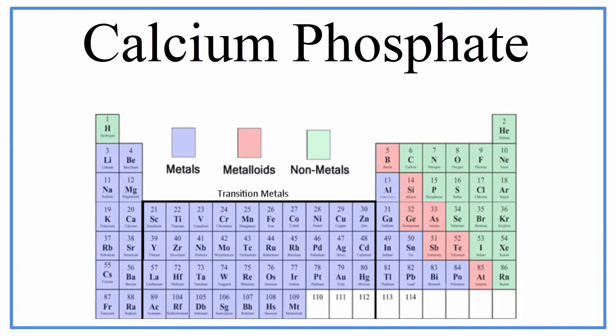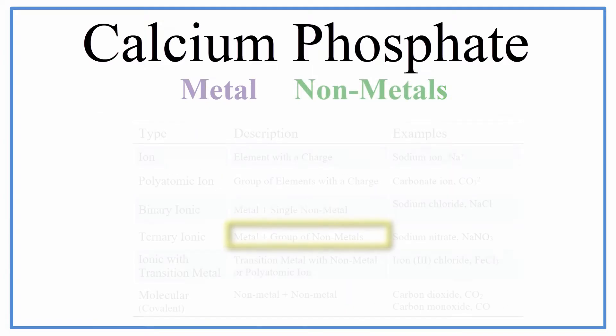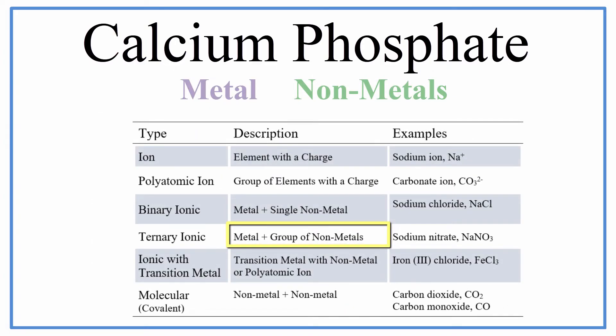The first thing we need to do is determine what type of compound we have. We know calcium, that's a metal, and then phosphate is a group of nonmetals, in particular phosphorus and oxygen atoms. When we have a metal and a group of nonmetals, we have a ternary ionic compound.